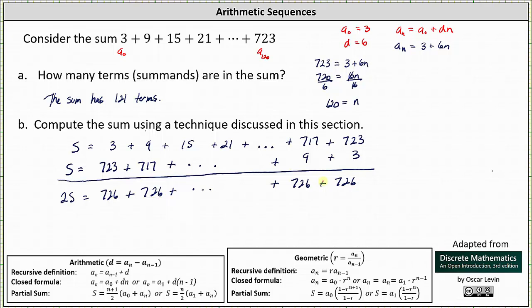Well, we know there are 121 terms in the sum, and therefore we have a sum of 121 726s, which means you can write this as 2S = 121 × 726.